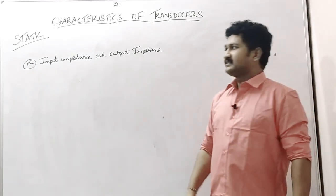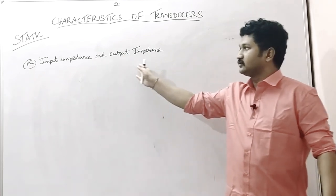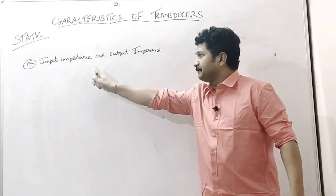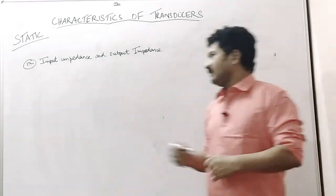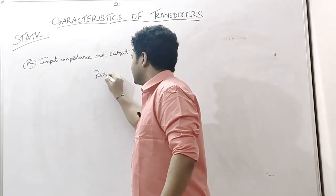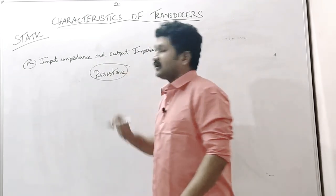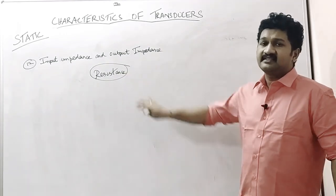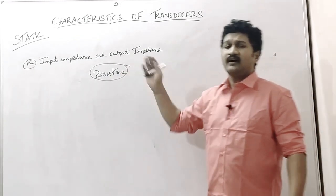Welcome to my channel. In this lecture, we are going to discuss the static characteristics of transducers. One of the characteristics is input impedance and output impedance. So what is meant by impedance? The word impedance means resistance. This is one of the most important terms in electronics—resistance is otherwise called as impedance.